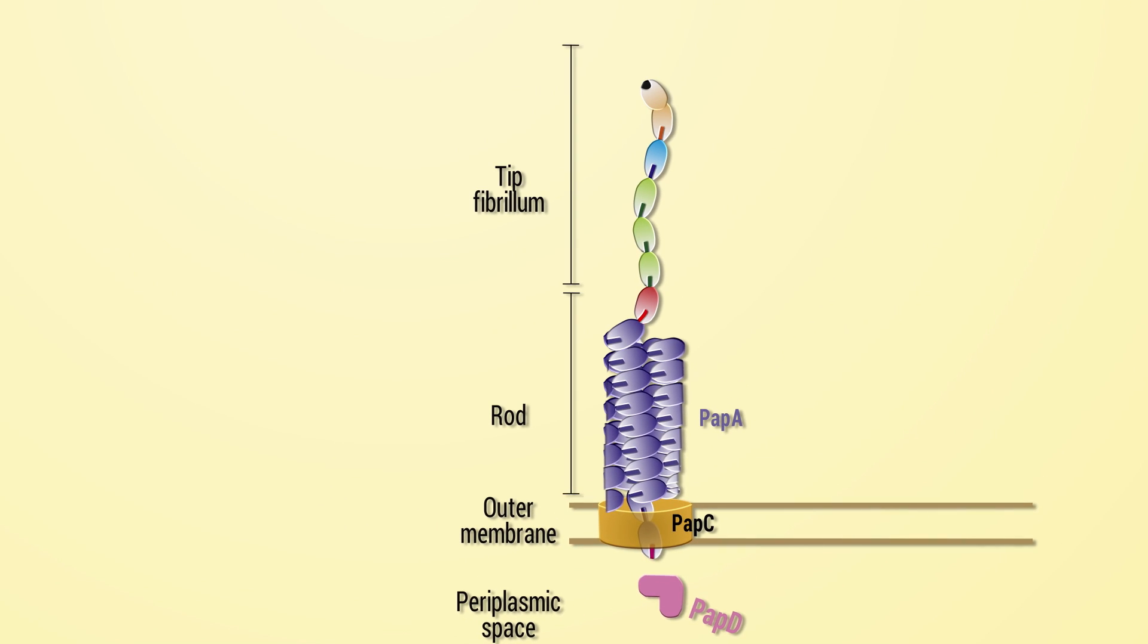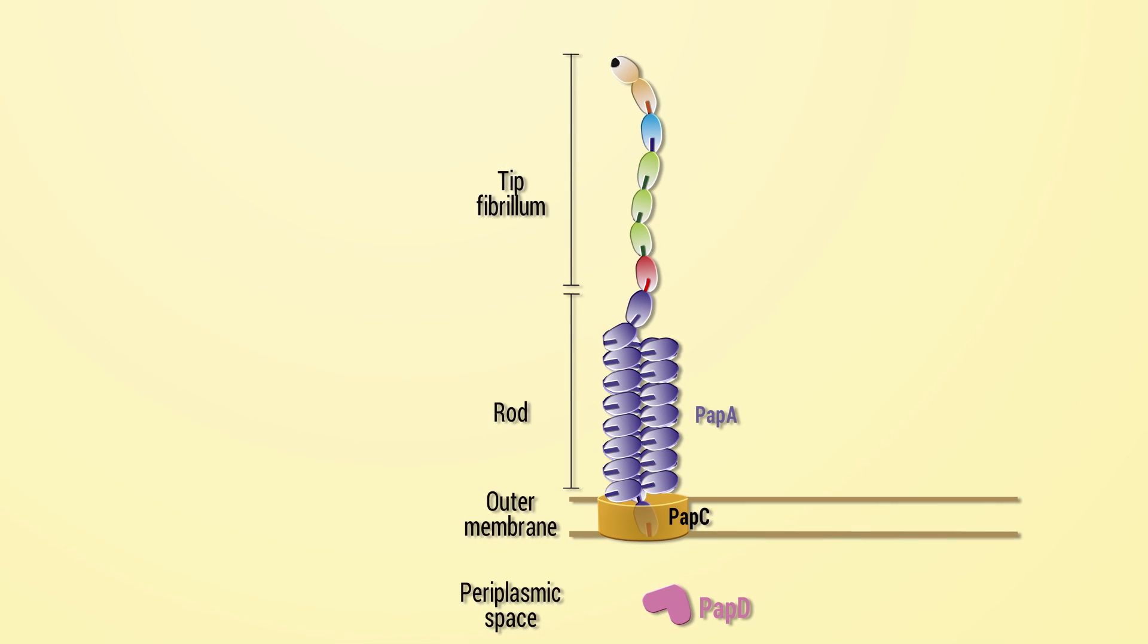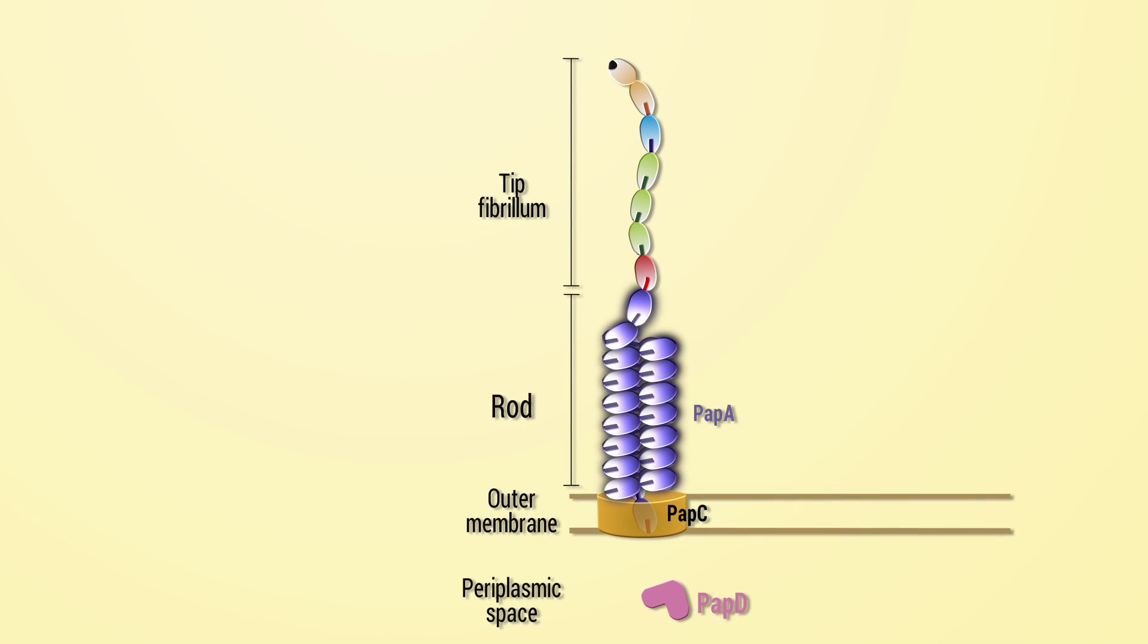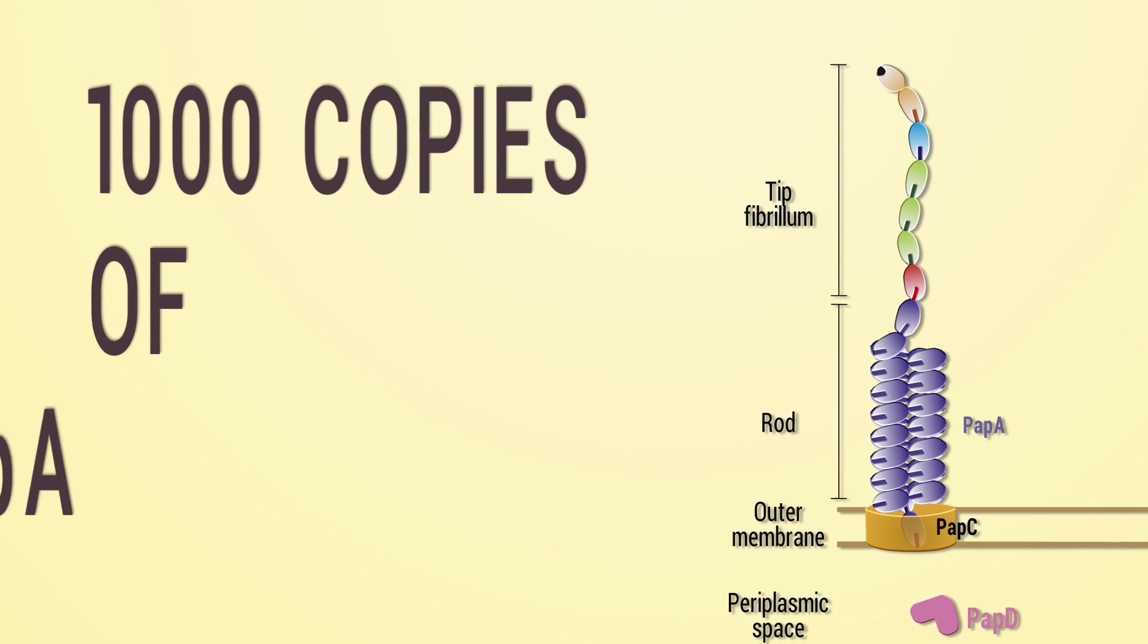Here the subunits polymerize and are assembled into a pilus which can be divided into a thin tip fibrillum and a helically wound rod which is composed of 1,000 copies of the major pilus subunit PAP A.